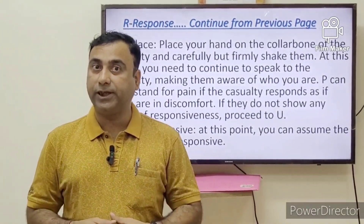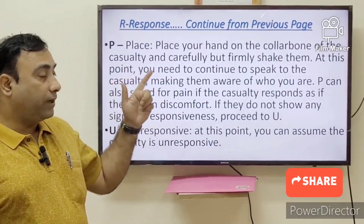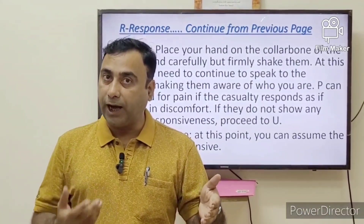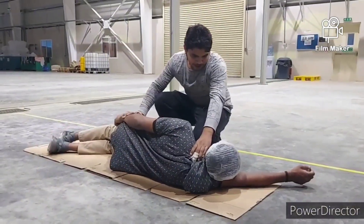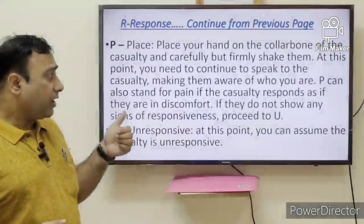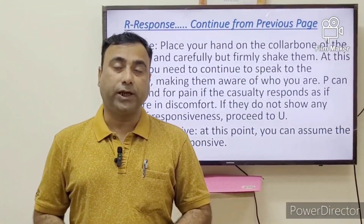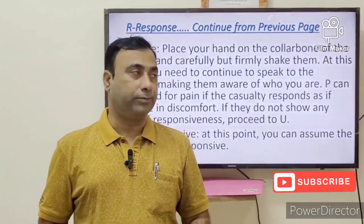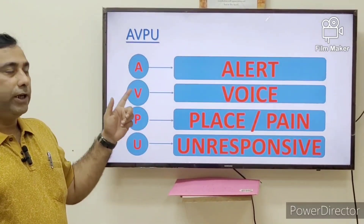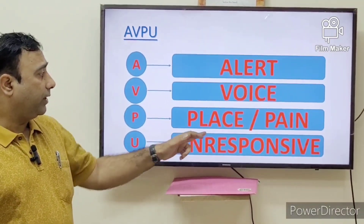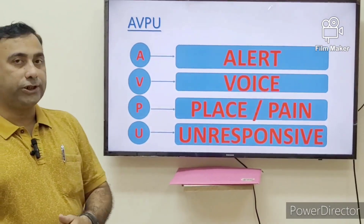P is for Pain: check if they are expressing their feelings by moving their hands, legs, or any part of the body. If not, place your hand on the collarbone of the casualty and ask them loudly, 'Hey, how are you feeling? Are you okay?' If there is no response, you can consider the casualty unresponsive. To summarize the AVPU scale: A for Alert, V for Voice, P for Pain, U for Unresponsive.